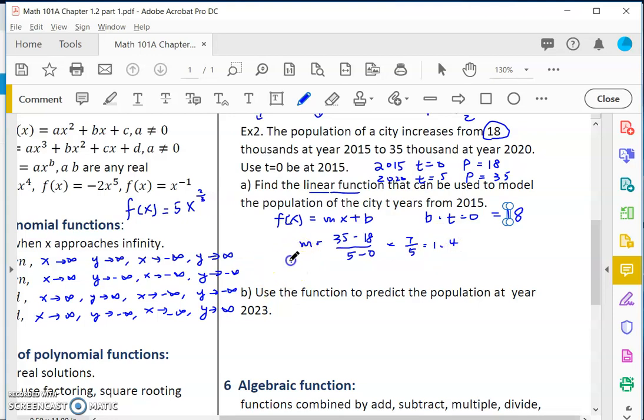So my function would be p of t, where t is time and p is population. p of t equals 1.4t plus 18.